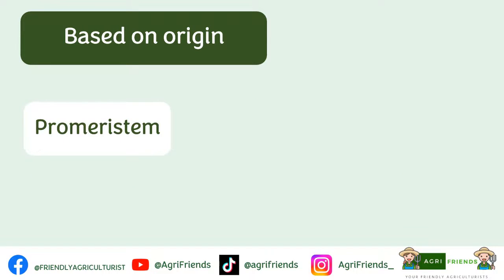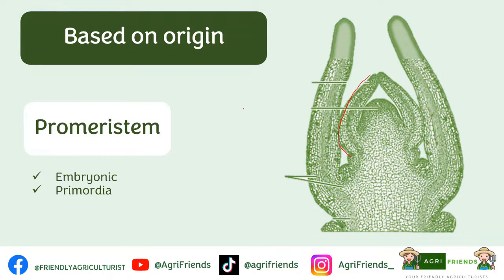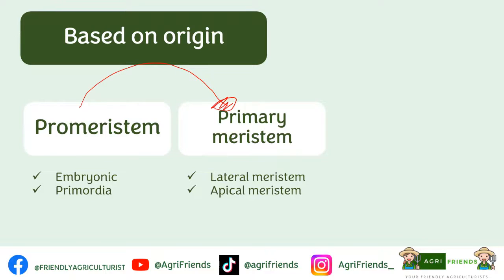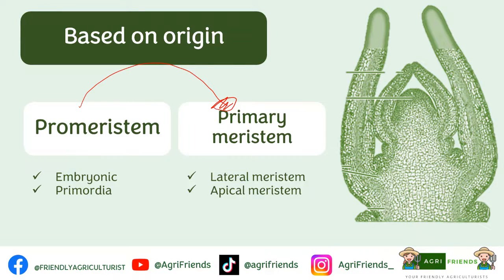Based on origin, we have the pro-meristem. Pro-meristem is a group of young meristematic cells that originated from the embryo, so we also call this the embryonic meristem. Primordia are a group of cells that represent the initial development of an organ — for example, this is your leaf primordia, which will become the leaf. We also have the primary meristem, which is derived from the pro-meristem. It appears in the early stages of plant life and is responsible for the formation of permanent tissues and the secondary meristem. Examples include the lateral and apical meristem, as shown in this figure of the apical meristem of a shoot.